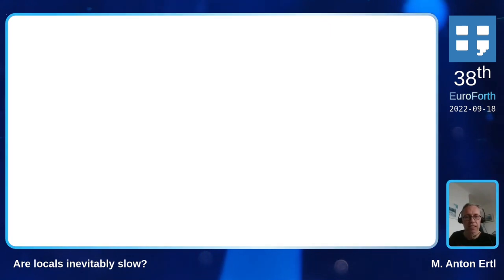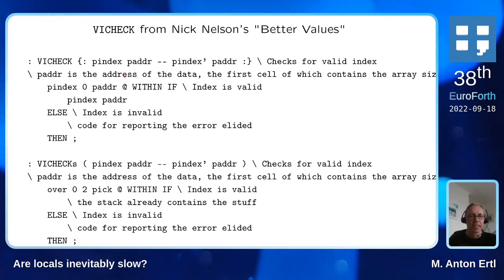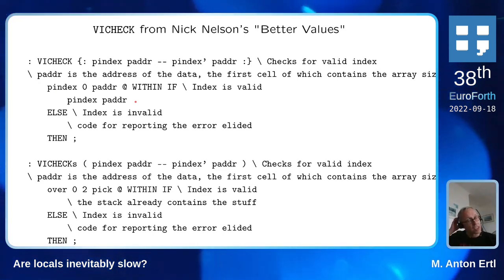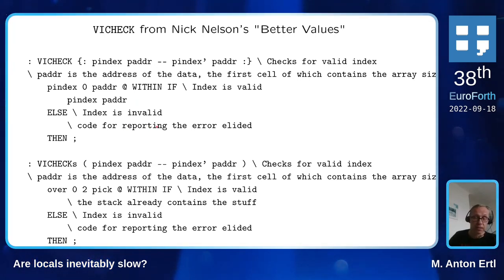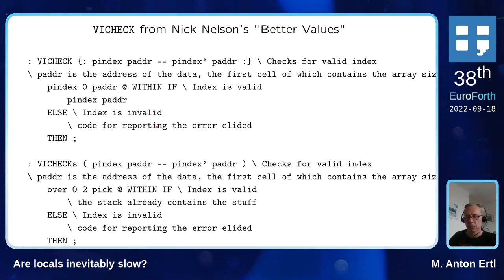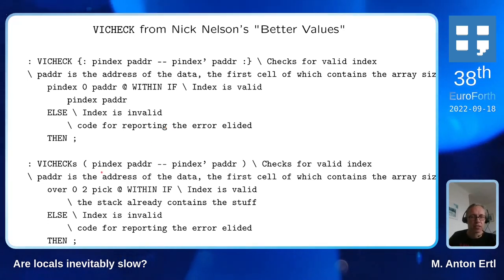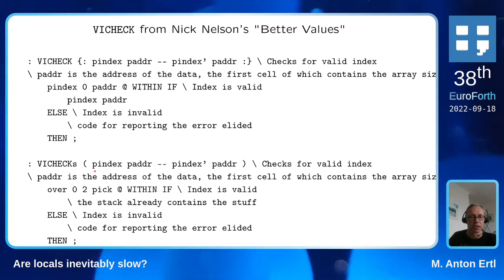Does it always work that well? Let's look at the next slide. I've looked at Nick Nelson's example about better values, and this is the part of the vi-check code that's actually being executed. I deleted the else branch in my experiments, partly because it uses some non-standard words and would expand the code with stuff not executed in the normal case. Here we have another version of vi-check which uses data stack words instead of locals.